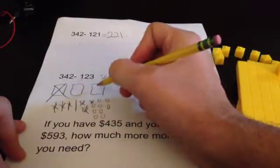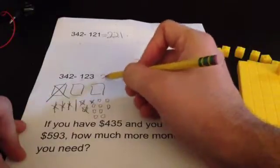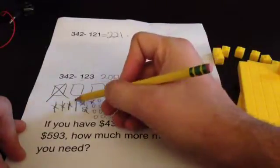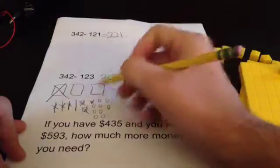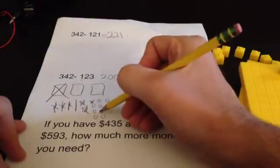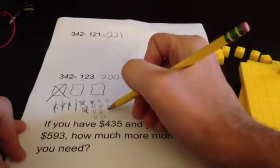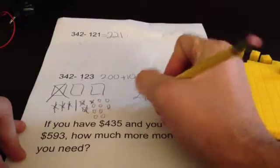And now, can I take away 3 ones? Yeah, I can. 1, 2, 3. What am I left with? 2 hundreds. Same with this, that's 200. 10. 9 ones. 1, 2, 3, 4, 5, 6, 7, 8, 9. 219.